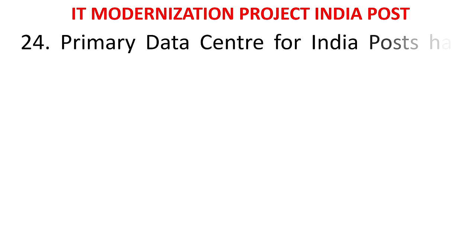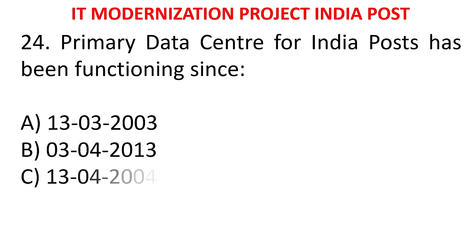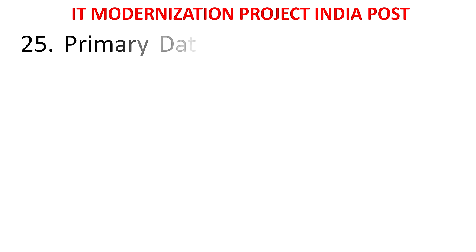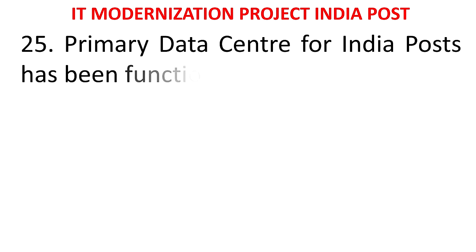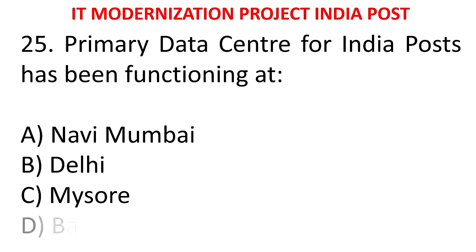MCQ 22: Primary data center for India Post has been functioning since - A) 13-3-2003, B) 3-4-2013, C) 13-4-2004, D) 4-3-2013. The answer is 3-4-2013. The primary data center is in Navi Mumbai. MCQ 23: Primary data center for India Post has been functioning at - Navi Mumbai, Delhi, Mysore, or Bangalore. The answer is Navi Mumbai.